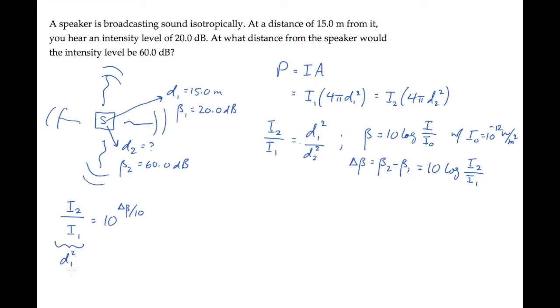And now we can replace, on the left-hand side, the ratio of intensities with the inverse of the square of the distance ratio. Solve this equation for d2 squared and take the square root to obtain this result. The distance d2 is d1 times 10 to the minus delta beta over 20.